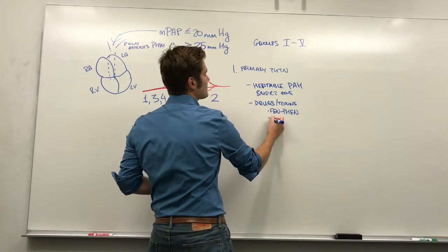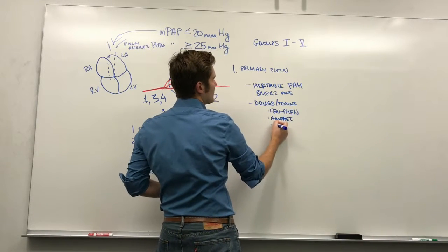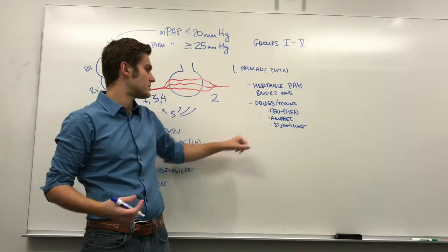Other things that fall under this class are amphetamines, St. John's Wort. A lot of random toxins fall under this. I think the big ones are appetite suppressants and amphetamines are huge for this.